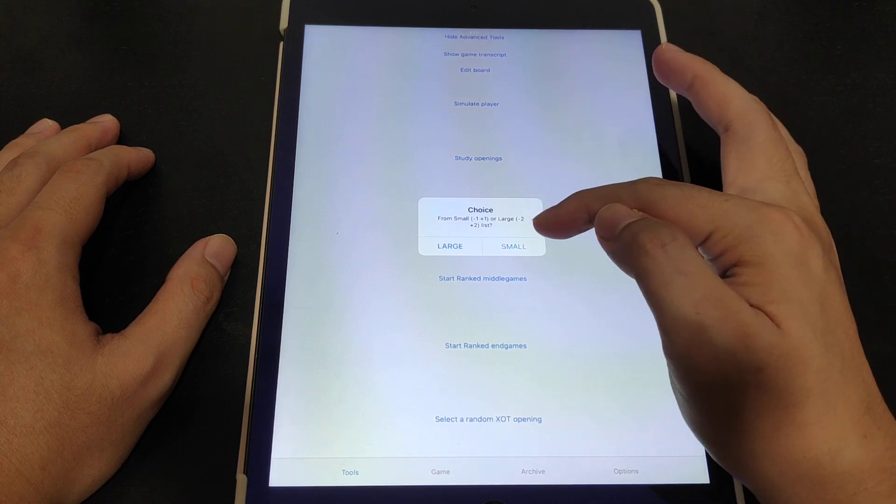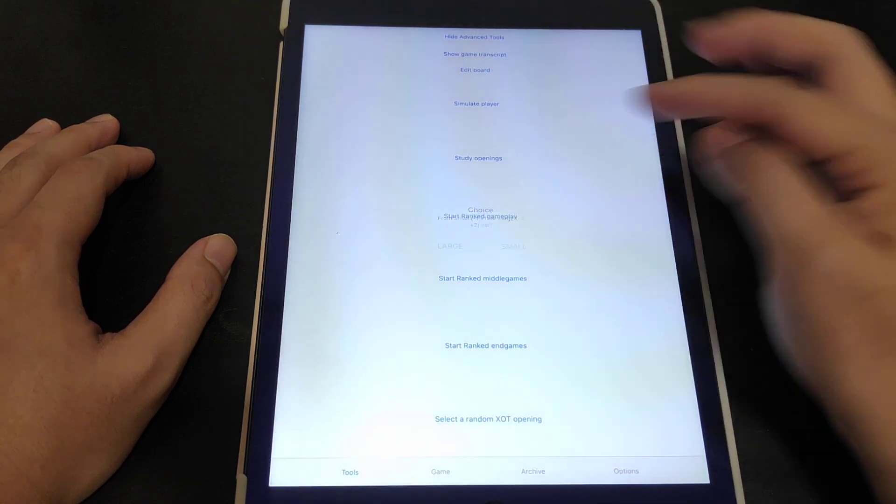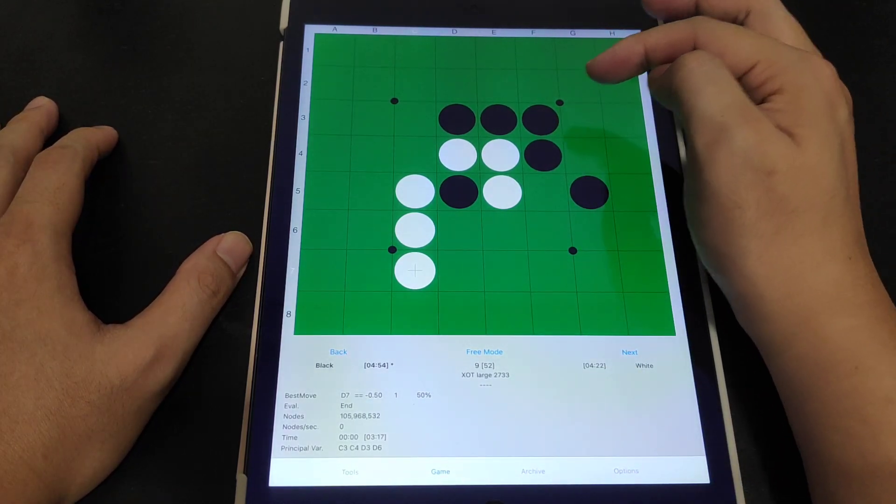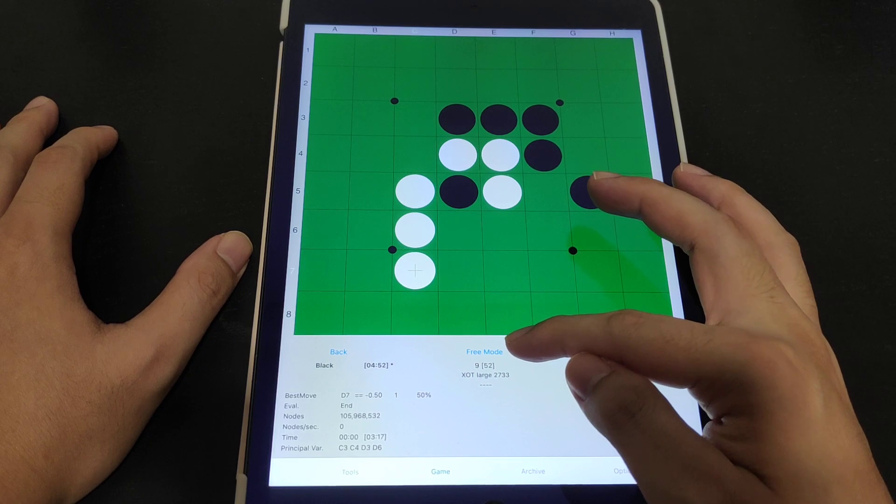Select a random XOT opening. You can choose whether you want a large or small deviation. So let's choose large perhaps. Over here they will show you a XOT large. And this is the opening.